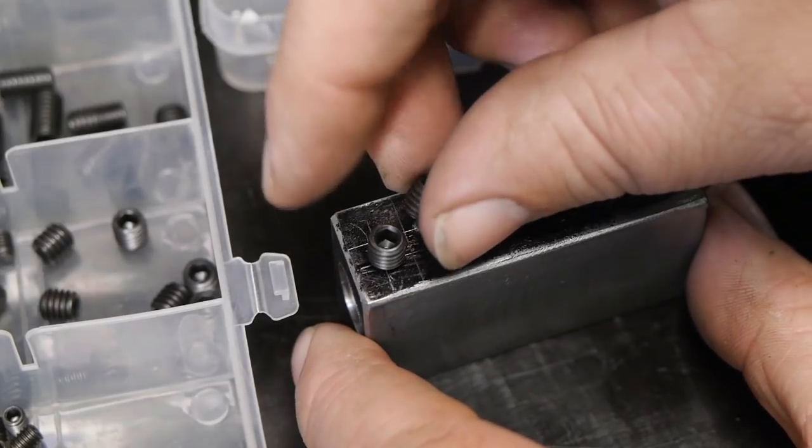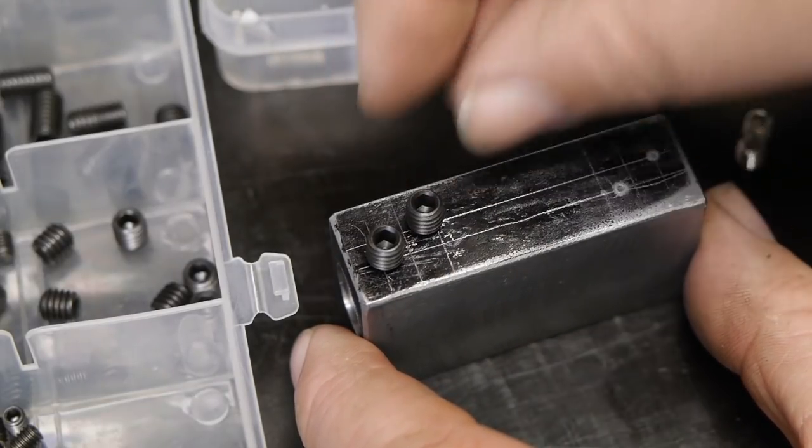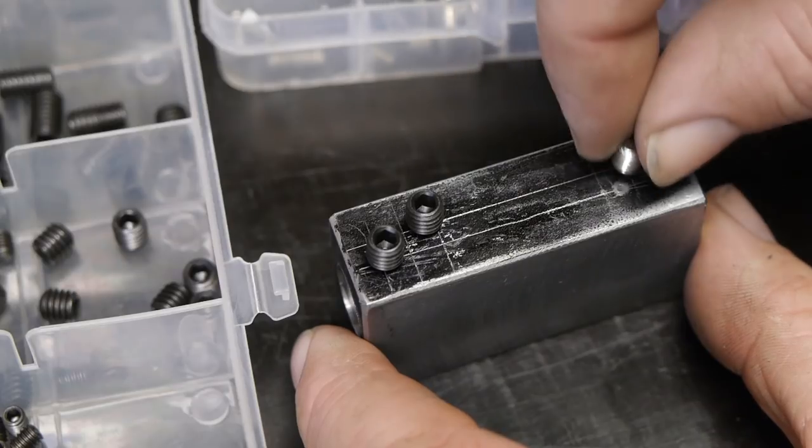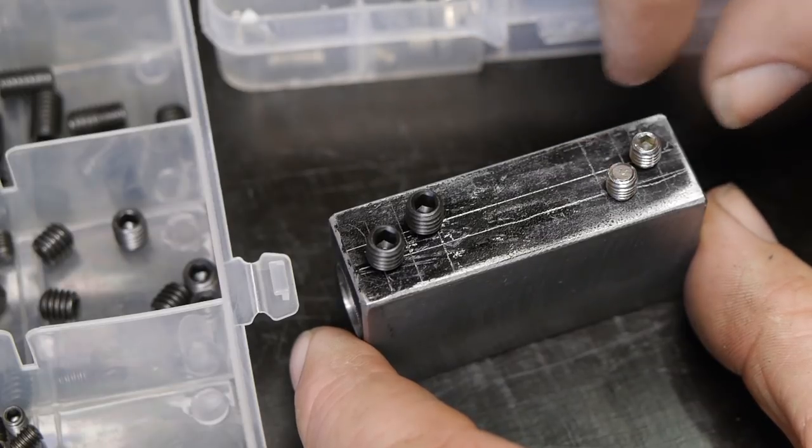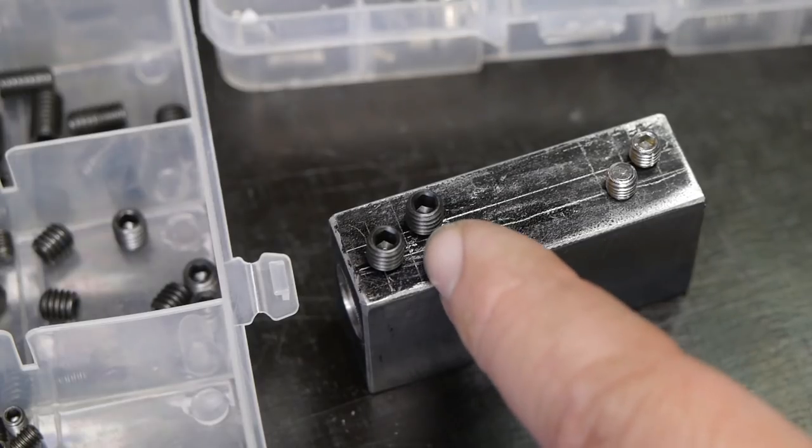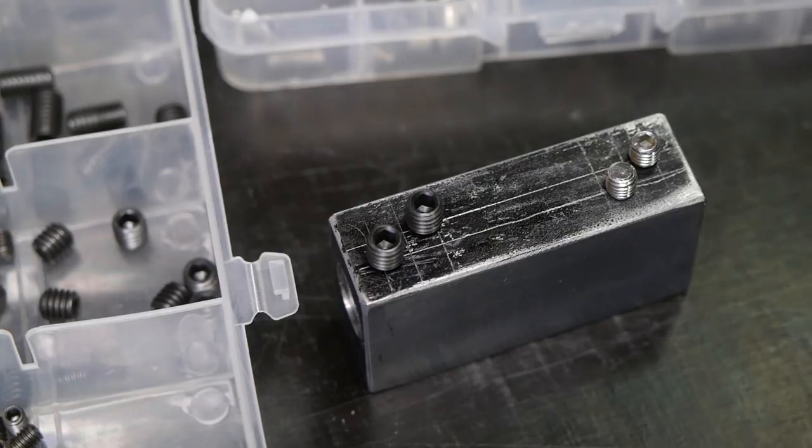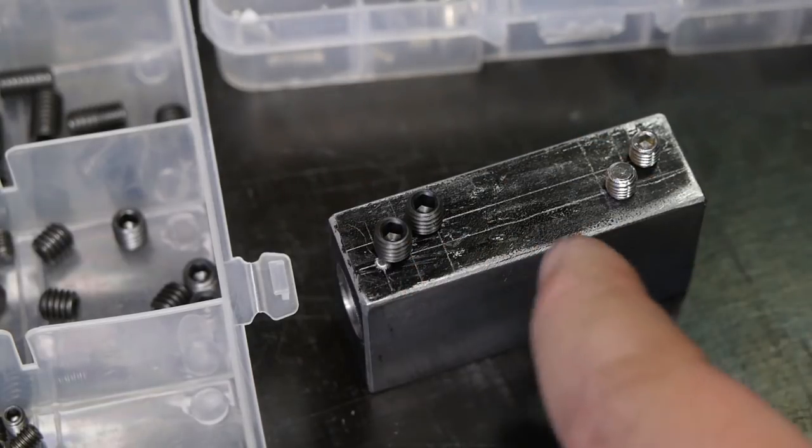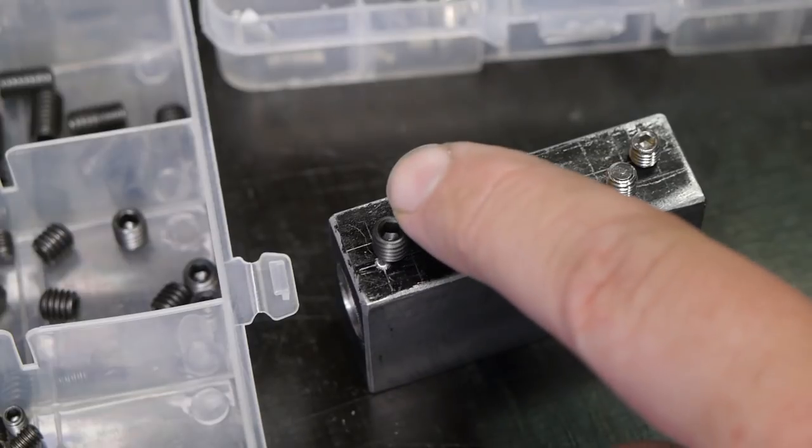I had a look in my set screw boxes. These are M6 and these are M5. I think both will do. These are a little bit closer next to each other. But I don't see any problem with that. So I'm going to use these.